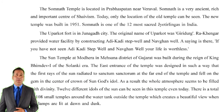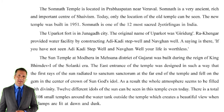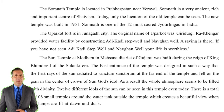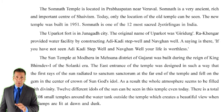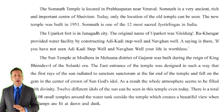The Somnath temple is located in Prabhashpatan near Verawal. Somnath is a very ancient, rich and important center of Shaivism. Today, only the location of the old temple can be seen. The new temple was built in 1951. Somnath is one of the 12 most sacred Jyotirlingas in India. The Uparkot fort is in Junagadh city. The original name of Uparkot was Giridurg. Rakhengar provided water facility by constructing Adikadi Step Well and Navghan Well.